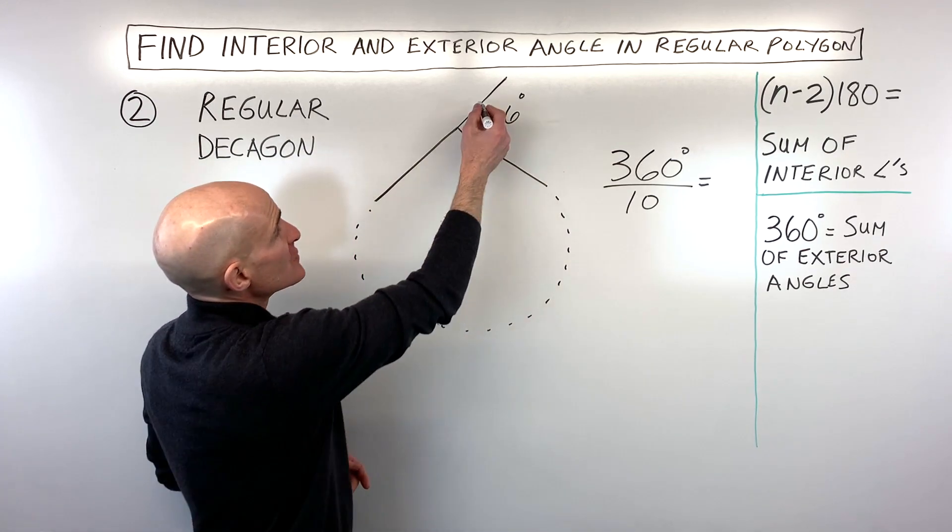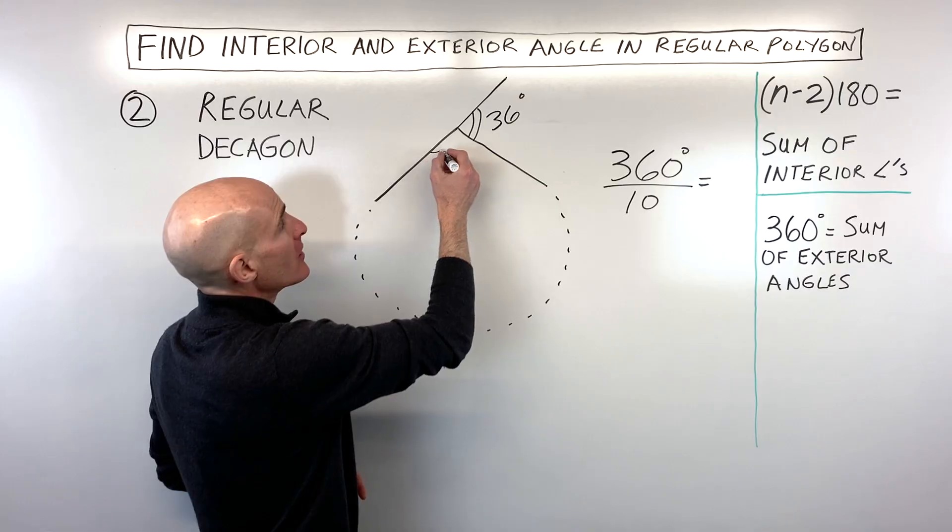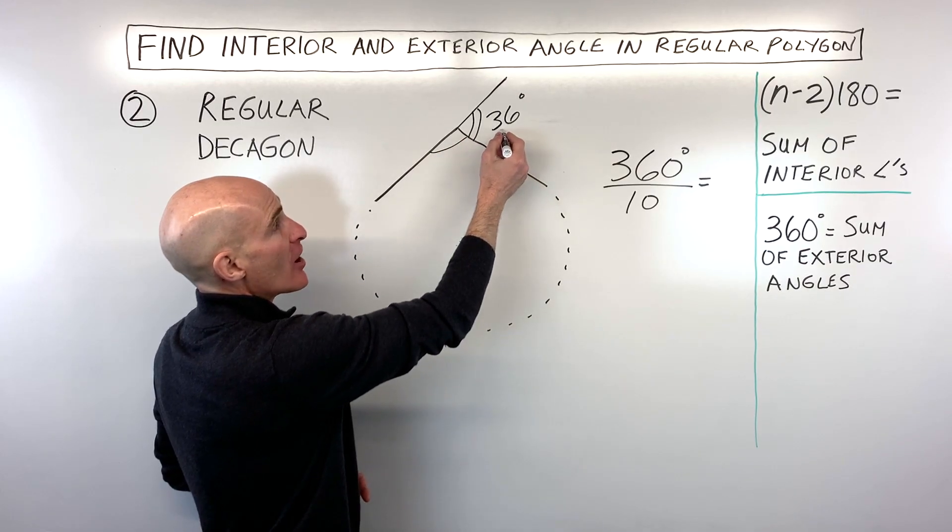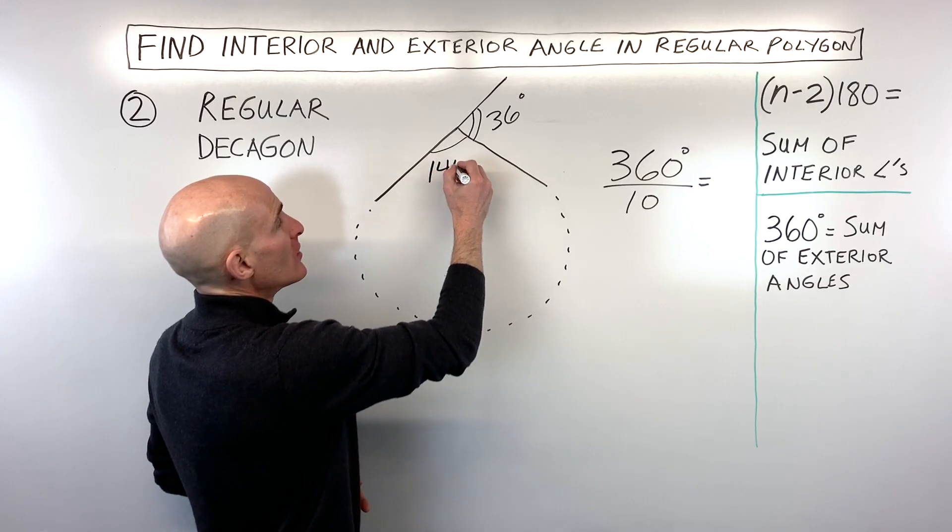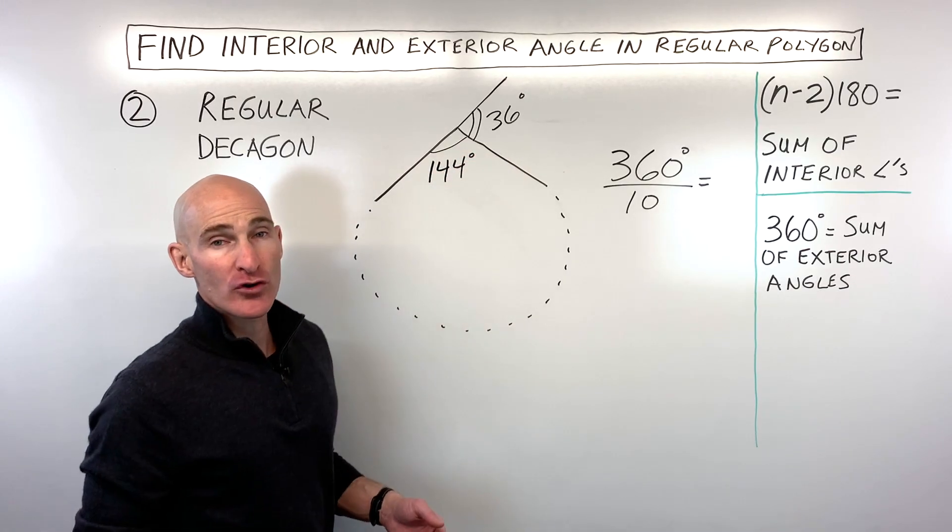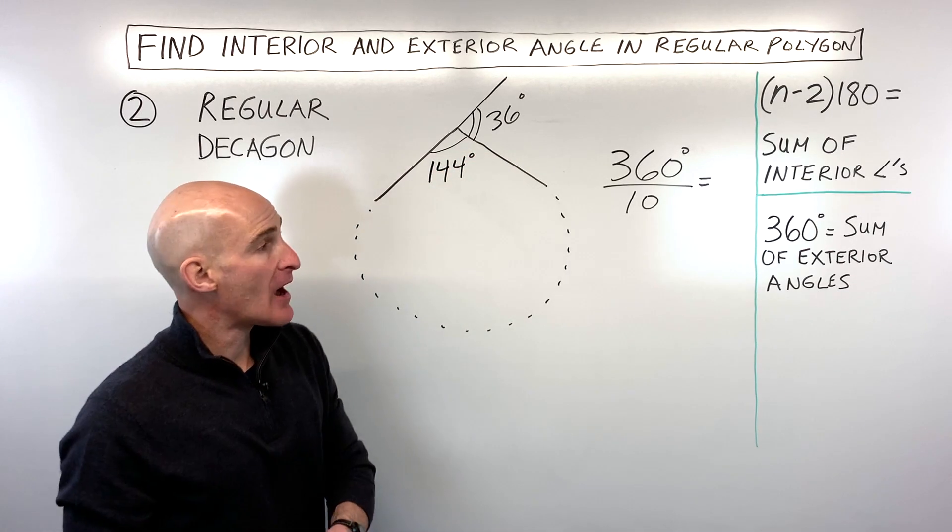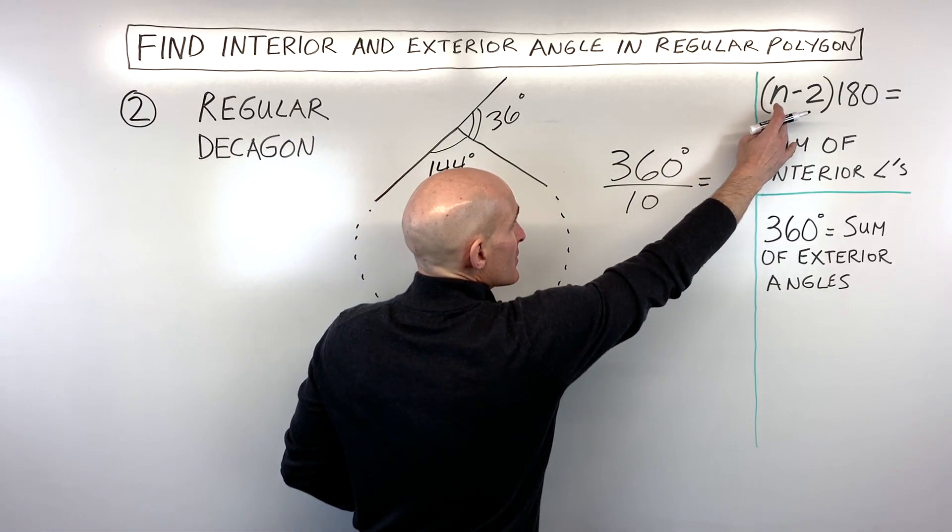Now all we have to do, since this forms a line, a linear pair, this interior angle is going to be 180 minus 36 degrees, which comes out to 144 degrees. So that's one option.